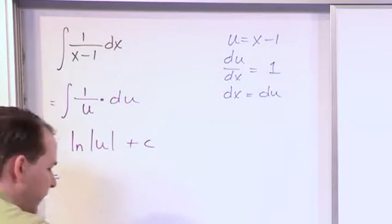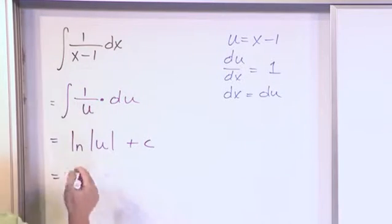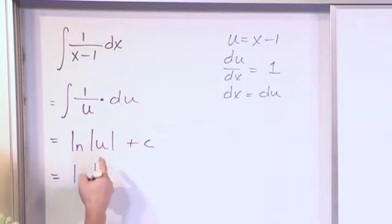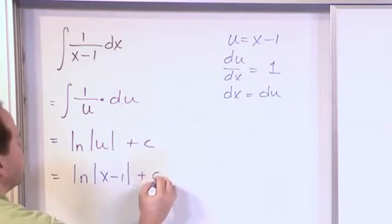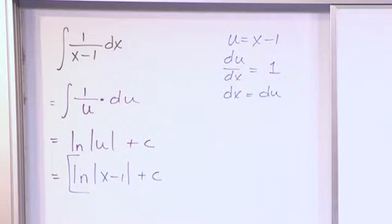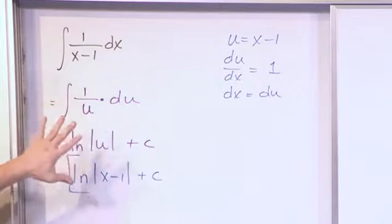But we don't want to circle that as our answer because we have to substitute in what we know u to be. u is x minus 1 plus a constant. Okay? So that's the final answer, natural log of x minus 1 plus a constant. We just have to do a substitution, see where it lands, and then use everything that we've learned up to this point to handle it.